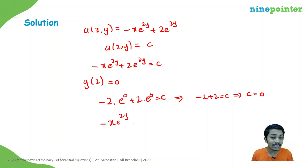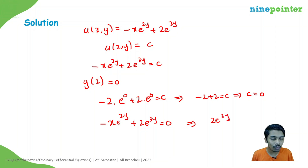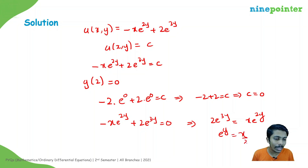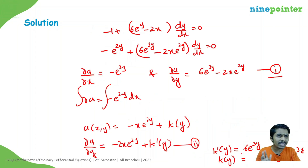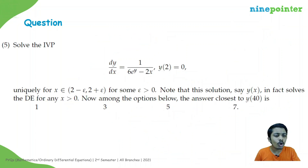The IVP solution is −x·e^(2y) + 2e^(3y) = 0, which simplifies to 2e^(3y) = x·e^(2y), so e^y = x/2. Therefore y = ln(x/2).